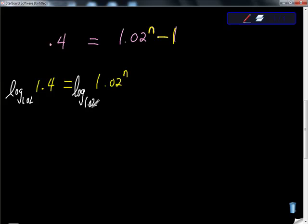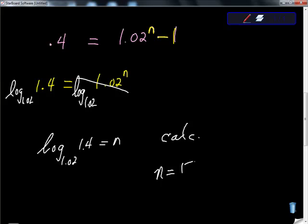First off, let's be clear about this. Log base 1.02 of 1.02 is just n. So you've got log base 1.02 of 1.4 equals n. And if you use your calculator, n equals 17.